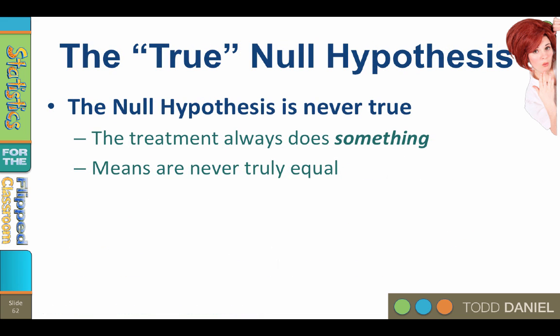Well, the big problem with this approach is that, in reality, the treatment always works. It always does something, even if that something is trivial. And means are never truly equal. If you go out enough decimal places, they will diverge. So the null hypothesis is never actually true.